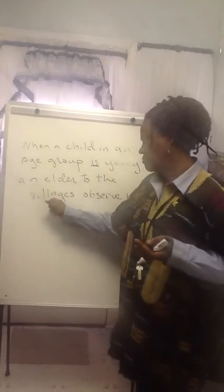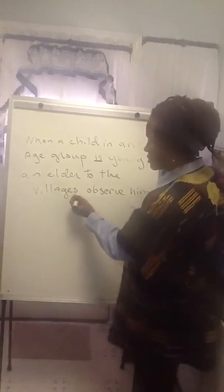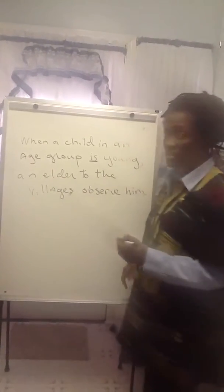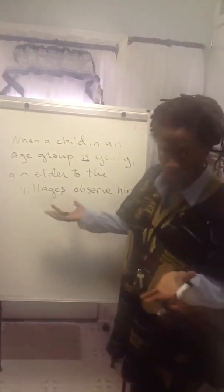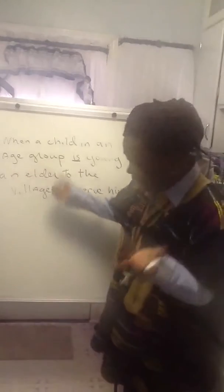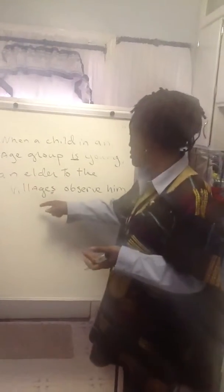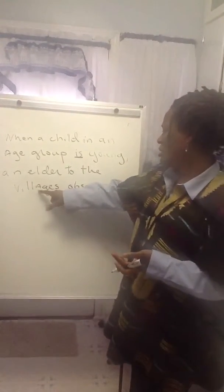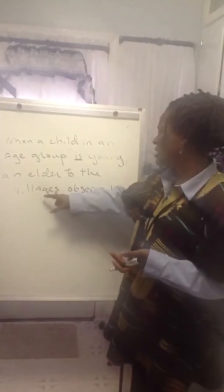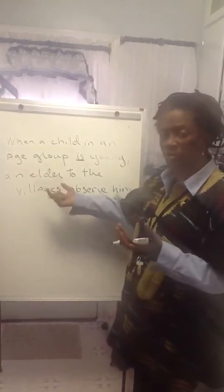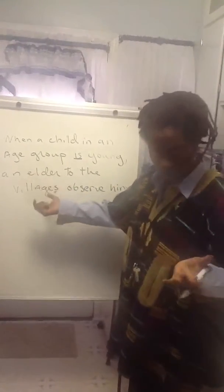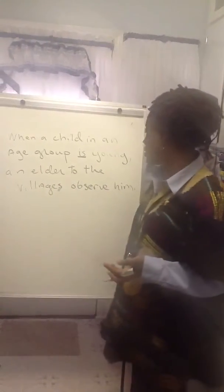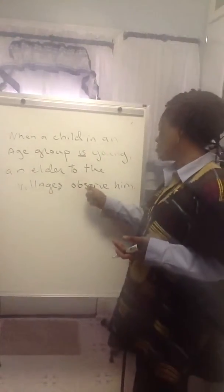Now, 'villages' could be a verb too, because it's got an S on the end, but 'villages' is a noun — it's a place. So that's a noun; it's a plural, more than one. Village. And 'observe.'